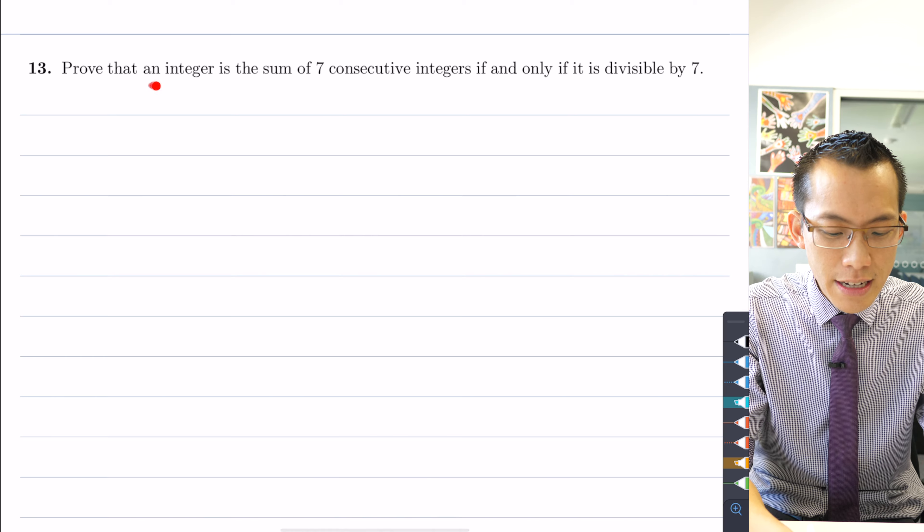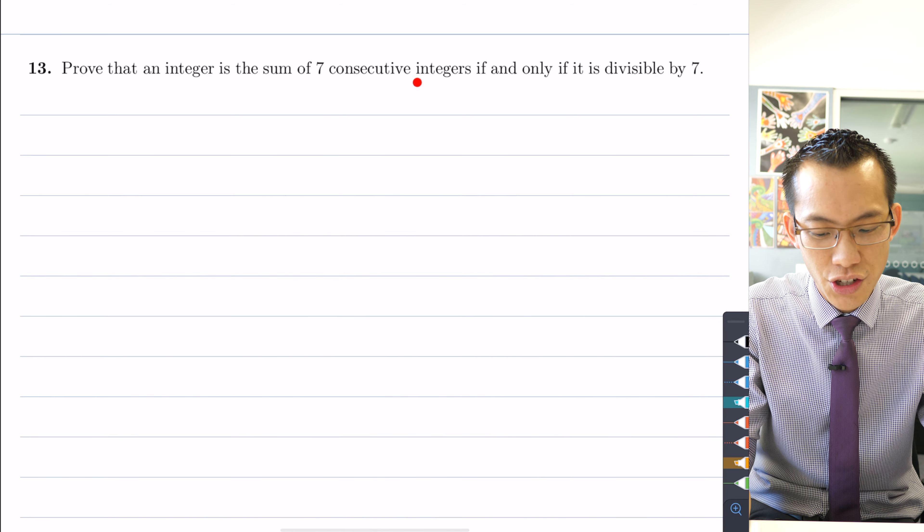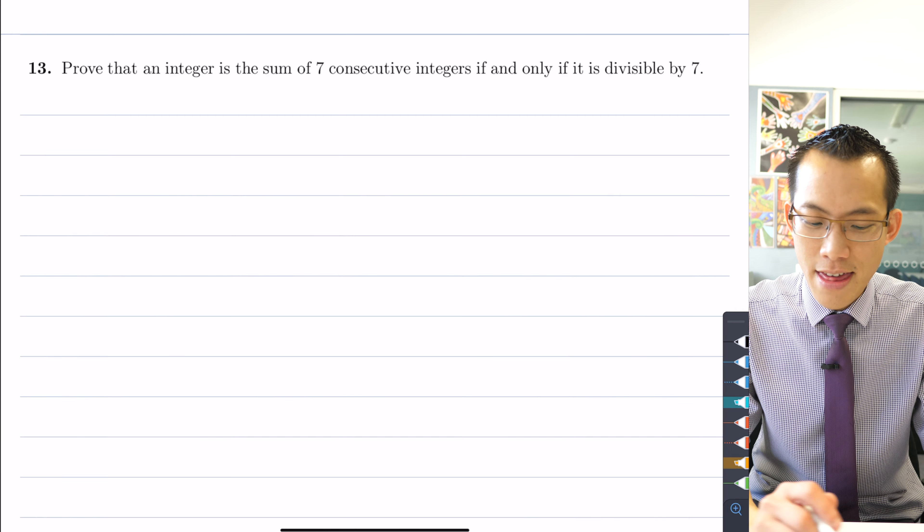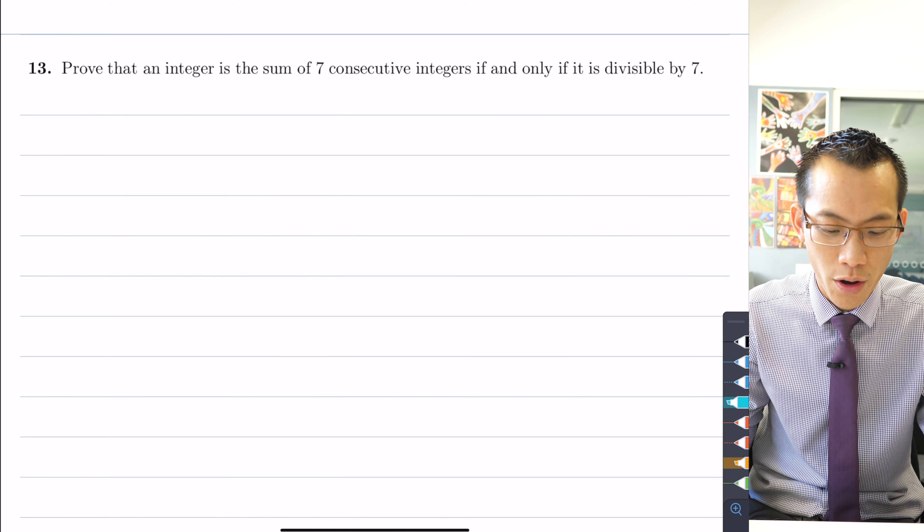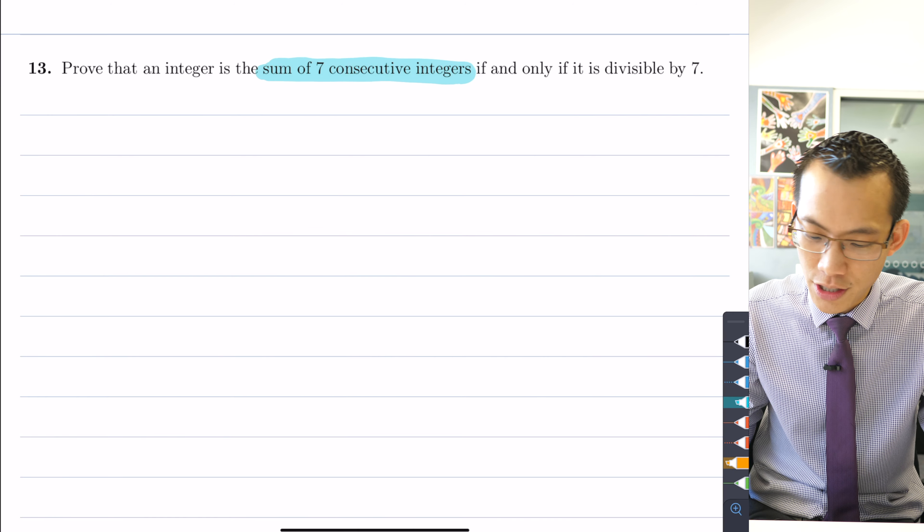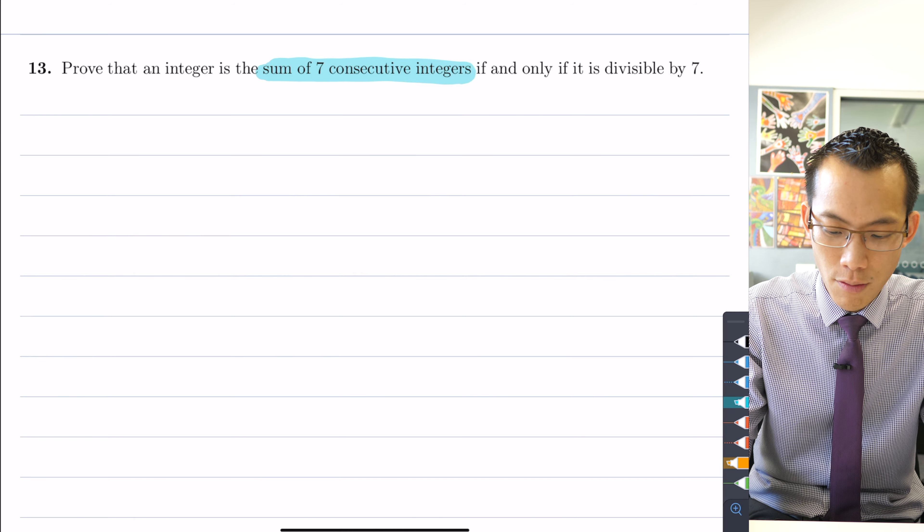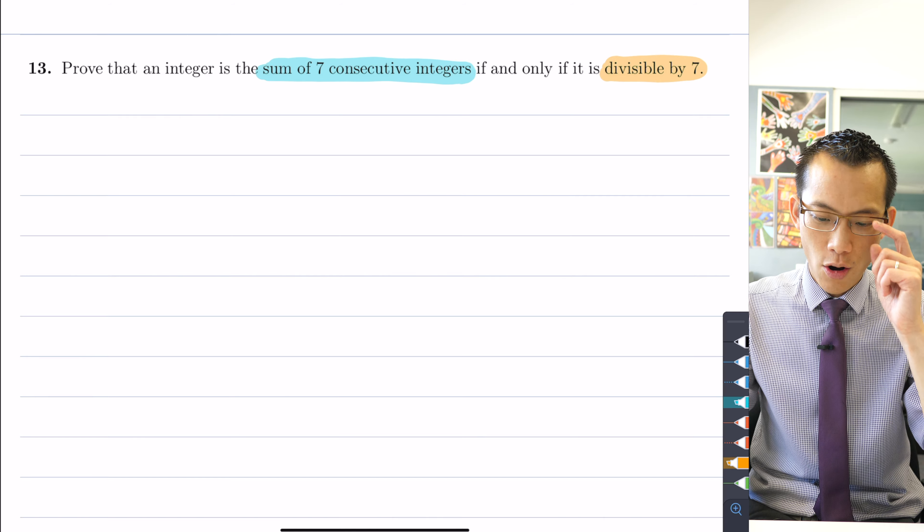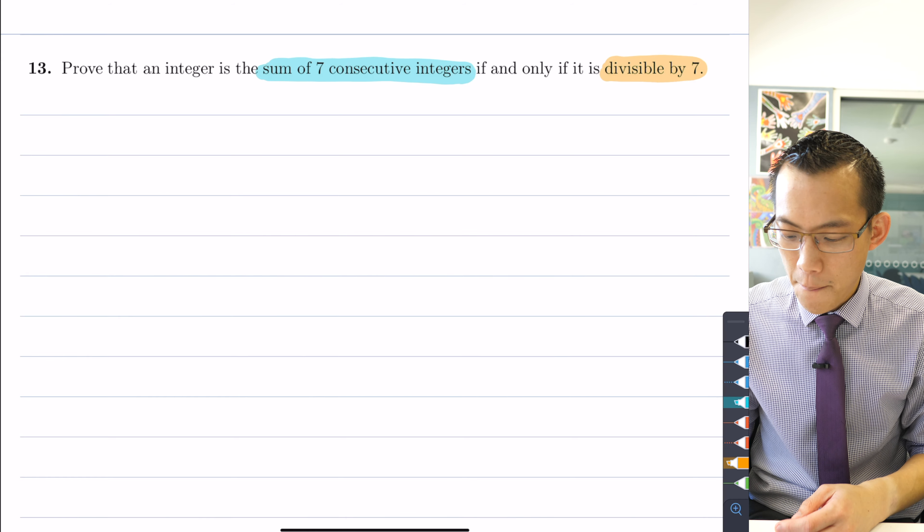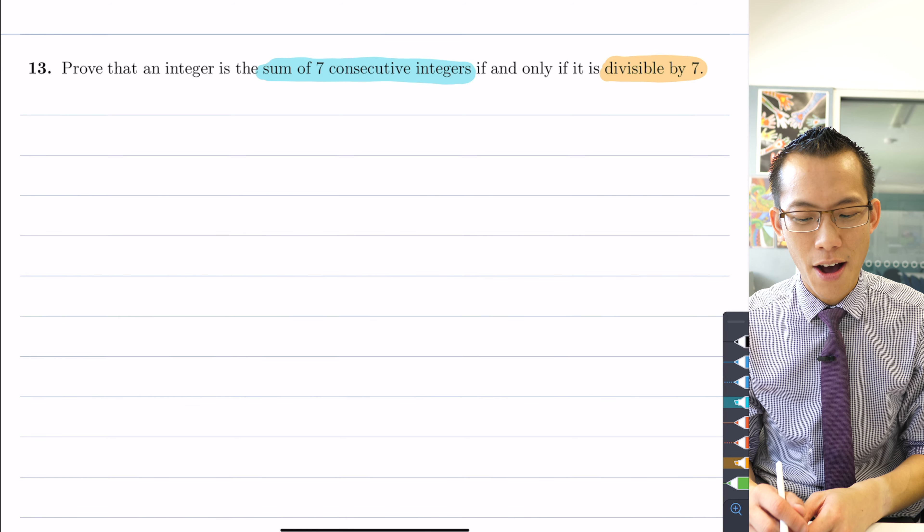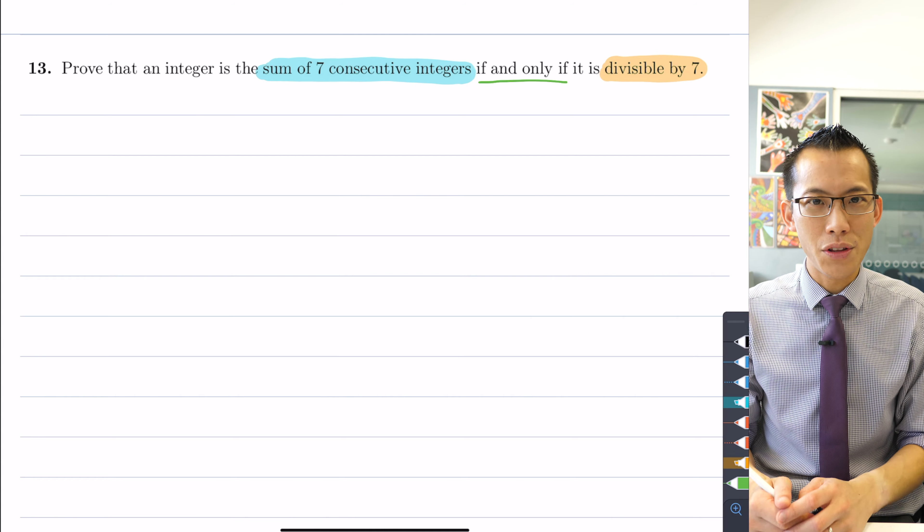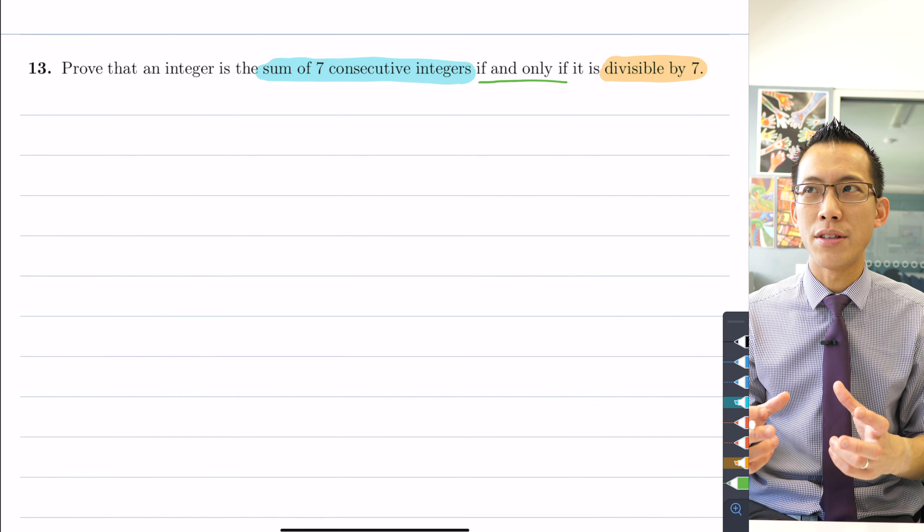Prove that an integer is the sum of seven consecutive integers if and only if it is divisible by seven. Now if you have a look at this, clearly there are some important pieces that are worth noting. We're going to have to work with the sum of seven consecutive integers, and we can phrase that in algebraic terms. We have a divisibility issue here, divisible by seven. We also know how to explain that and express that in algebraic terms—it's just a multiple of seven, so seven times some integer. But I actually think the weirdest and trickiest part of this is kind of hiding in plain sight: this part here, if and only if.